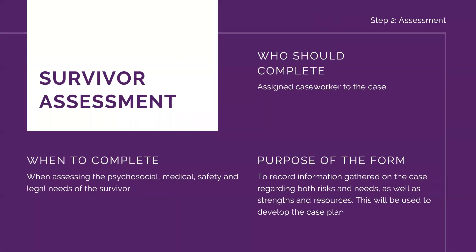Next, we have survivor assessment. The assessment form is a crucial part of the case management process. This is how we understand the presenting issue and the compounding factors. After the welcome and introduction step, we assess the psychosocial, medical, safety, and legal needs of the survivor linked to the violence she has experienced. This is done by the assigned caseworker. The point of this is to record information gathered on the case regarding both risks and needs, as well as strengths and resources. The information recorded in this form will be analyzed and used as a base for developing the case plan.